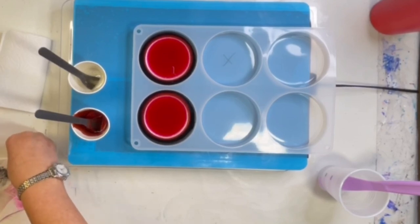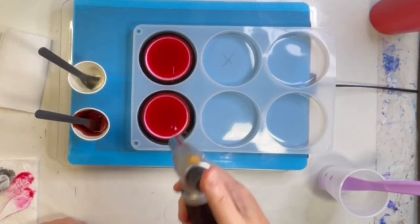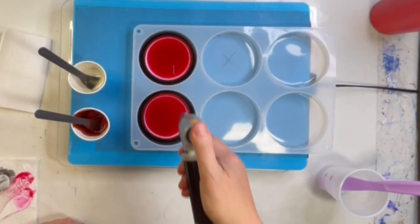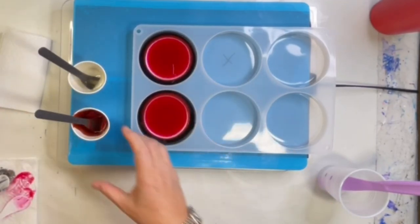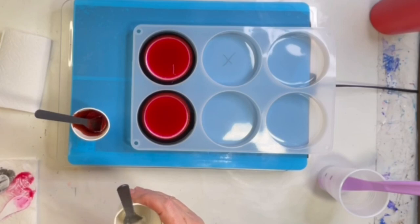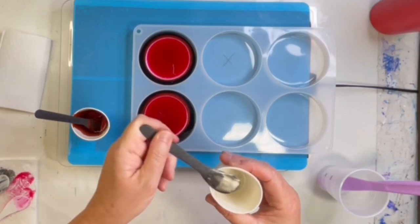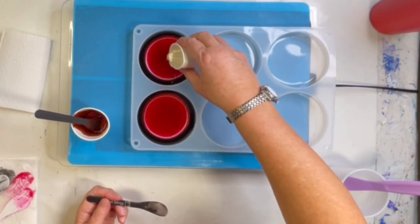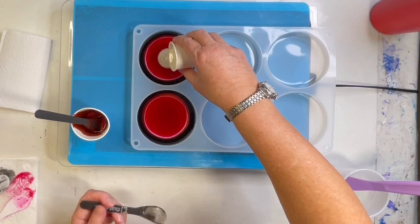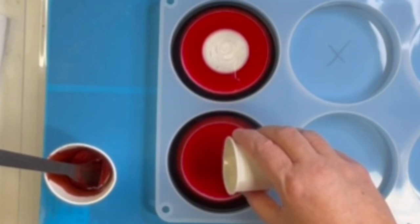And then we go again with the white, but I'm going to torch first. I'm getting very good at fusing my resin to the mold, so I'm trying to be a little more careful. Give this another little stir.